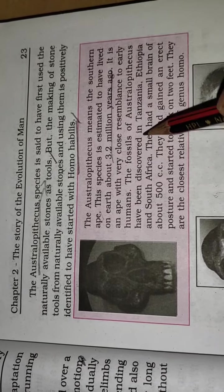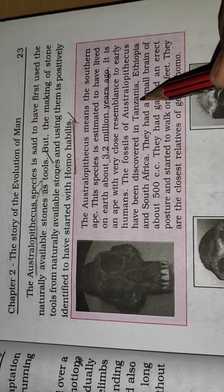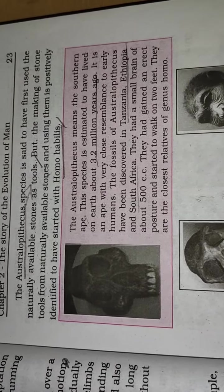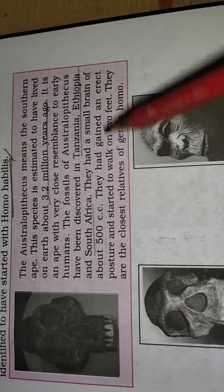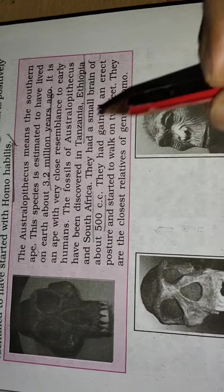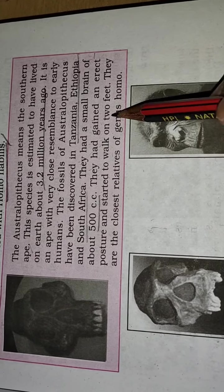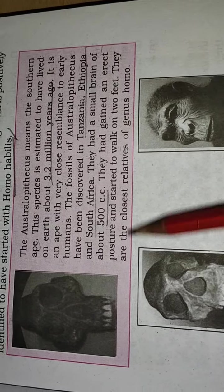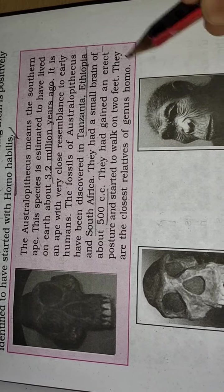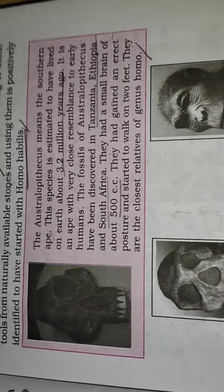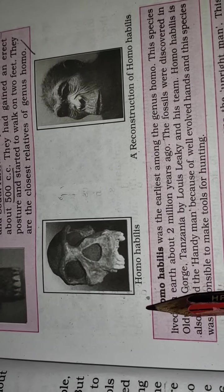Fossils of Australopithecus have been discovered in Tanzania, Ethiopia, and South Africa. They had a small brain of about 500 cubic centimeters, an erect posture, and started to walk on two feet. They are the closest relative to the genus Homo — almost like human beings, with similar postures.